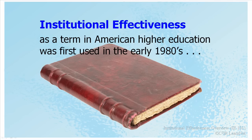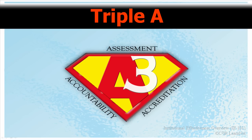The new term was institutional effectiveness. And today, more than a decade later, that term seems to have found its way into the general lexicon of assessment terminology, as well as into the standards and verbiage of many accreditation colleagues. I have coined the term AAA, or the three A's, to refer to the origins of institutional effectiveness. The three A's are assessment, accreditation, and accountability. We'll now take a closer look at each of these three elements in the next three slides.